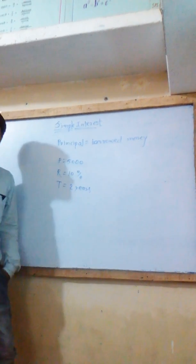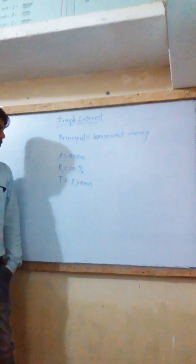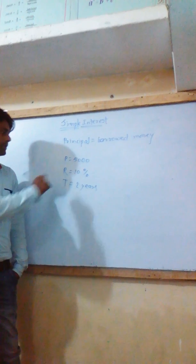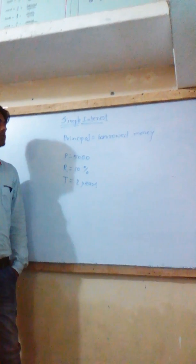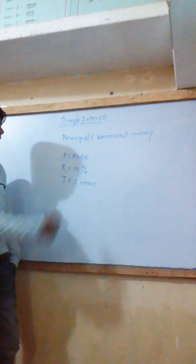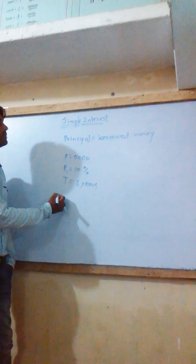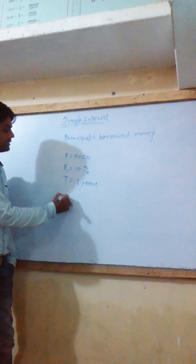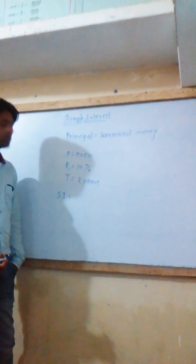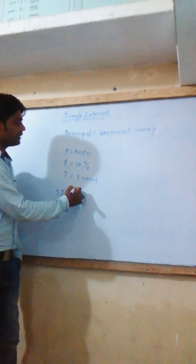Now I want to calculate the simple interest on 5,000 rupees at the rate of 10% for 2 years. How will I calculate this? We have a very simple formula for simple interest. I will write in short form as SI.